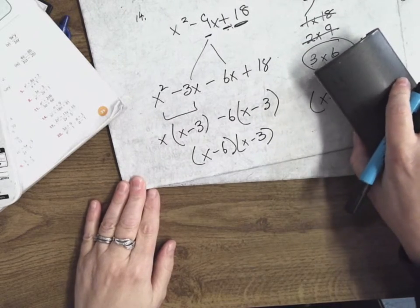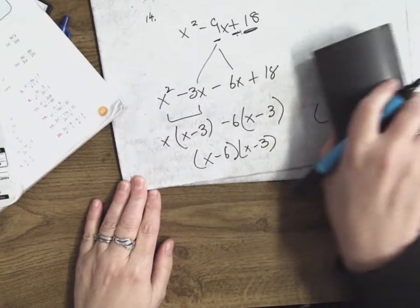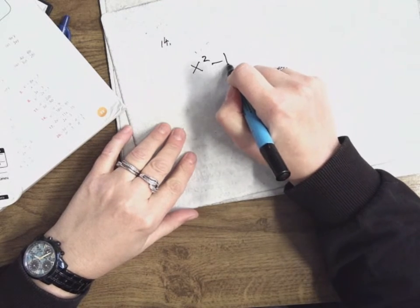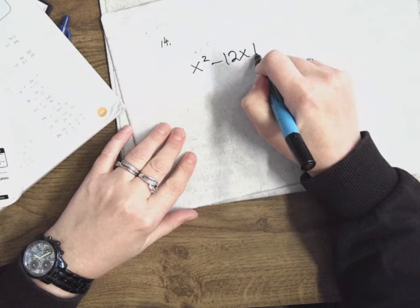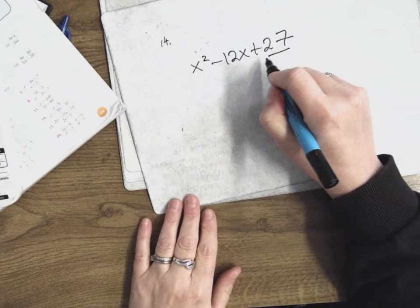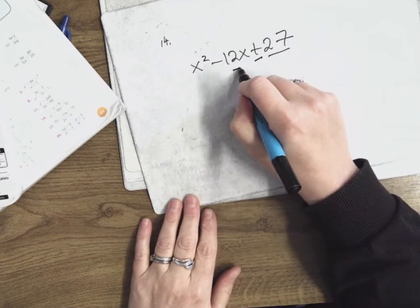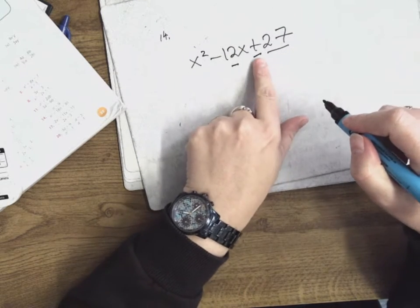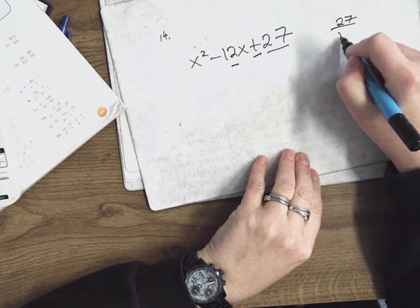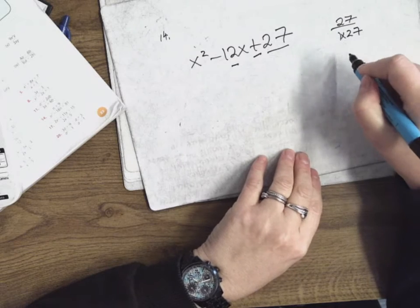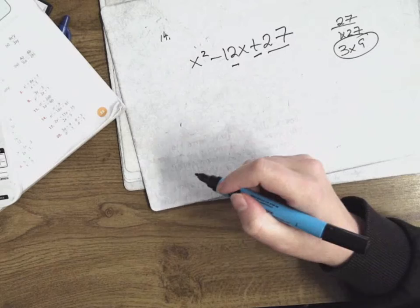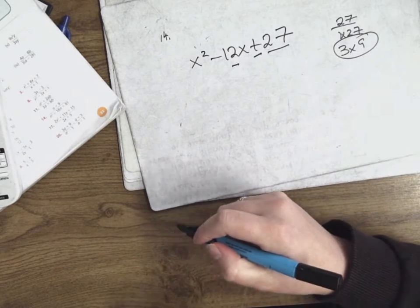Number 17. So 17 reads: x squared minus 12x plus 27. You're looking for the factors of 27 that add to give me 12. Factors of 27: 1 by 27 — no. 3 by 9 — yes, because 3 and 9 add to give me 12.